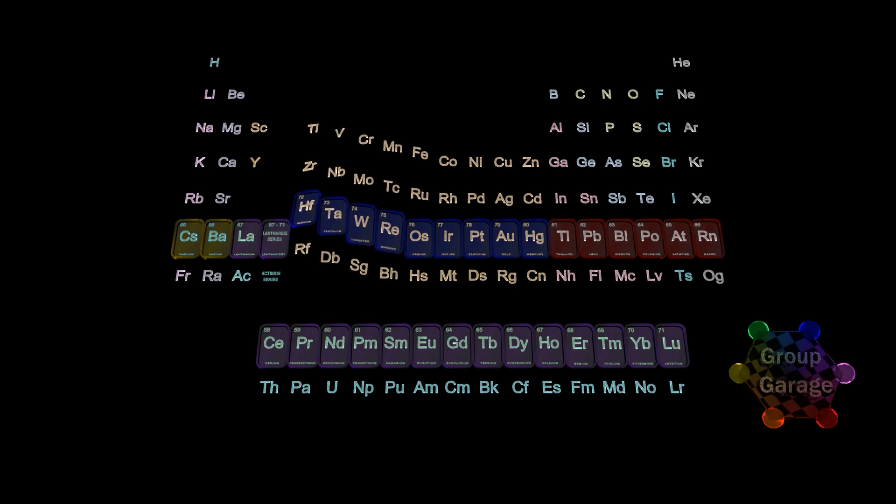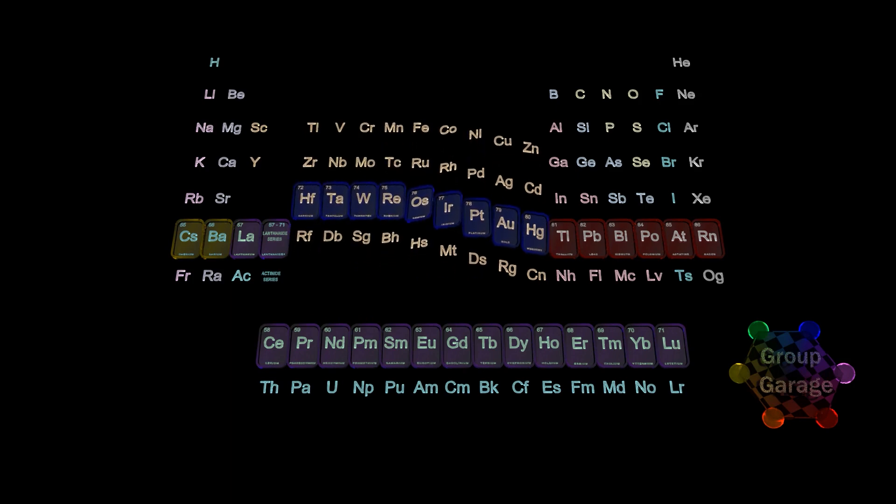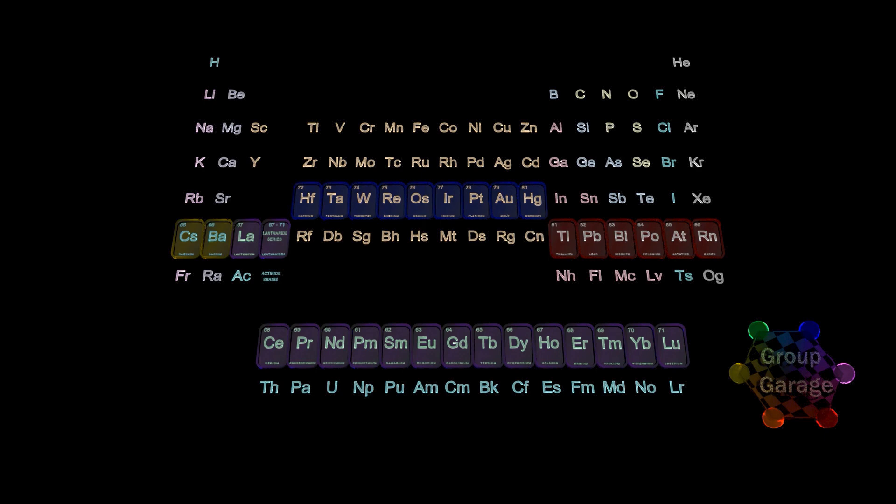Recall, the d-shell we are filling was for the principal energy level n-1, or the row above, so the sixth row will be filling the 5d orbitals.